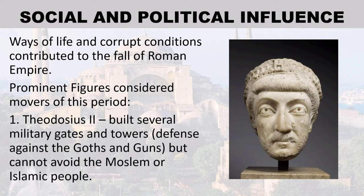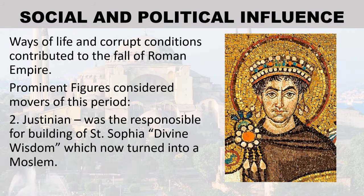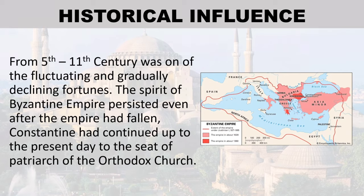Prominent figures of this period include Theodosius II, who built several military gates and towers as defense against invaders but could not prevent the Muslim or Islamic people. Justinian was responsible for the building of Saint Sophia — the Divine Wisdom — which was later turned into a Muslim mosque. Historically, from the 5th to 11th century, the Byzantine Empire experienced fluctuating and gradually declining fortunes, yet the spirit of the Byzantine Empire persisted even after the Empire had fallen. Constantinople continued as the seat of the Patriarch of the Orthodox Church.